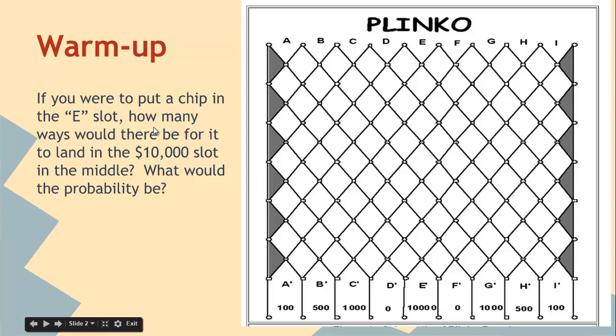So here's a warm-up question that really gets to what we have to do here with the number of routes. If you were to put a chip in the E slot, that's right in the middle, where you maybe want to put it because you see like E prime down at the bottom as the $10,000 prize. How many ways would it be for it to land in the middle slot, and what would the probability be? So you can think about that. It's pretty challenging, but if you can think about that, it'd be kind of neat to see if you can get it.